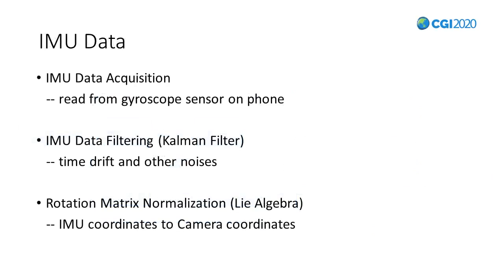Now, let's go into the details of our solution. The first is the IMU data acquisition. We simply read it from the gyroscope sensor on the smartphone. Next, due to the noise contained by these off-the-shelf sensors, we apply a common filter to do filtering. Then, to transform the rotation matrix from IMU coordinates into camera coordinates, we utilize the Li-algebra method.